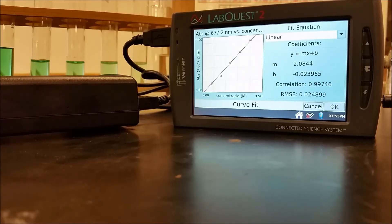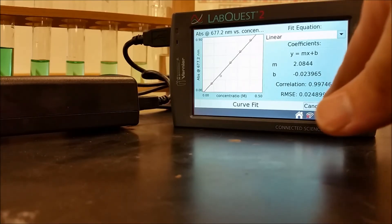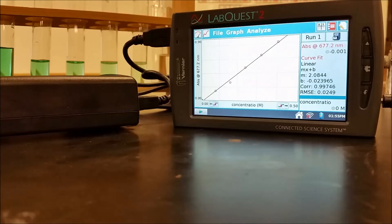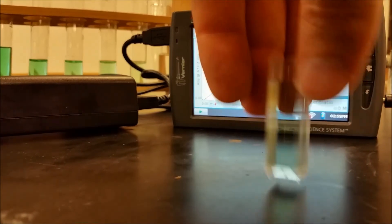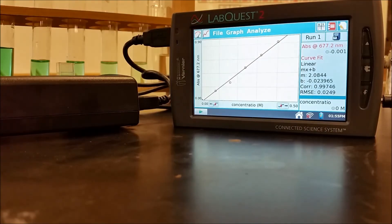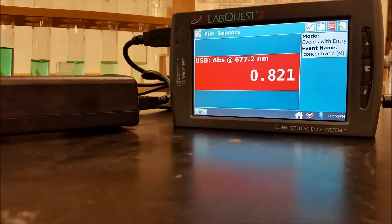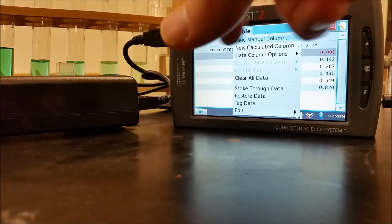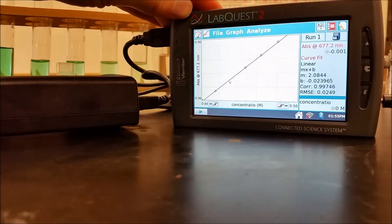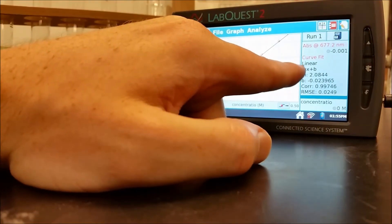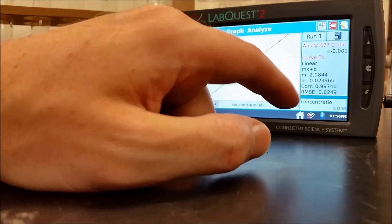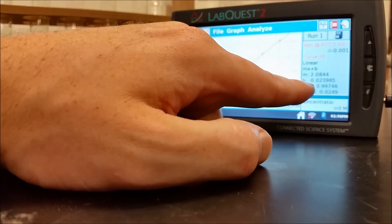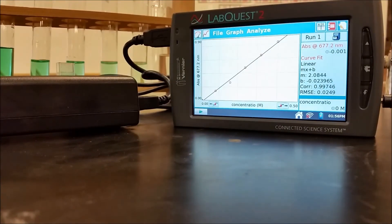I'm going to take my unknown and put that in. So here's my unknown solution. And my meter says that it's 0.260 is the absorbance. So what I can do is I can plug in 0.260 as y and then I can add 0.023965, divide by my slope and that'll tell me what my concentration is.